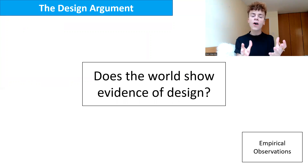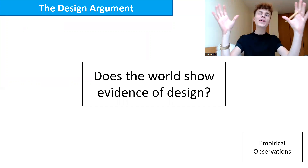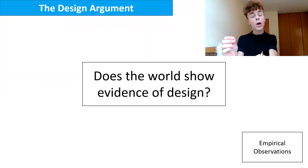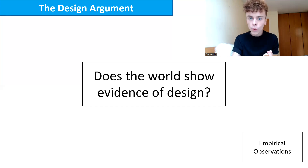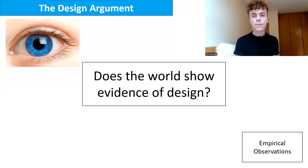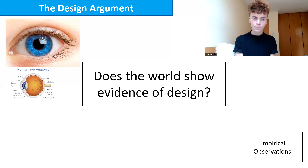I want to start with a foundational question: does the world show evidence of design? When you look out at the world around you, do you see evidence of what we call design? We are making empirical observations, using our senses to find things out. Consider the human eye — its complexity and the fact that all the different parts work together so well for a certain purpose. Do we see in the human eye evidence of design?